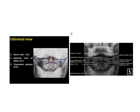Now this is another view, the odontoid view or open mouth view. This is mainly done to study the dens, the atlas, and the axis vertebra. Here you can see the dens, then the anterior arch of the atlas, and the transverse process of the atlas.